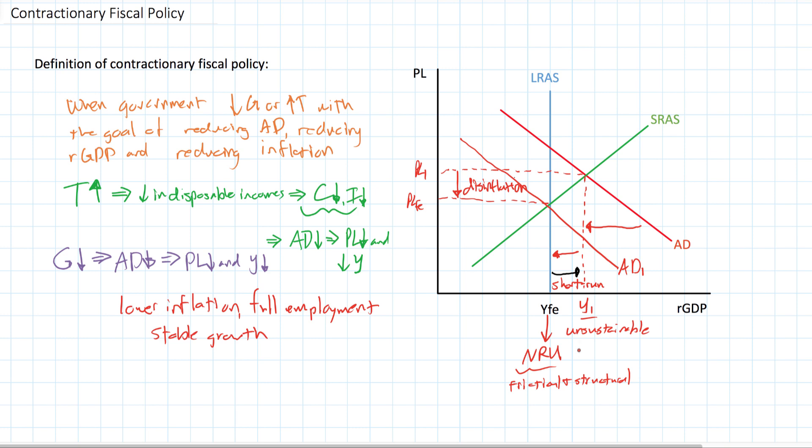So we've talked about expansionary fiscal policy in our last video, and in this video we talked about contractionary fiscal policy: when a government decreases government spending or increases taxes with the goal of reducing AD, reducing real GDP, and reducing the rate of inflation.